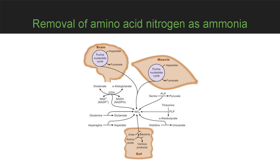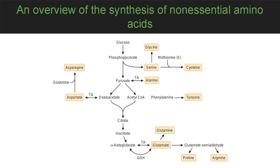Synthesis of amino acids: the carbons of 10 amino acids may be produced from glucose through intermediates of glycolysis or the tricarboxylic acid cycle. The 11th non-essential amino acid, tyrosine, is synthesized by hydroxylation of the essential amino acid phenylalanine. Only the sulfur of cysteine comes from the essential amino acid methionine; its carbon and nitrogen come from serine. Transamination reactions involve pyridoxal phosphate and another amino acid/alpha-keto acid pair.